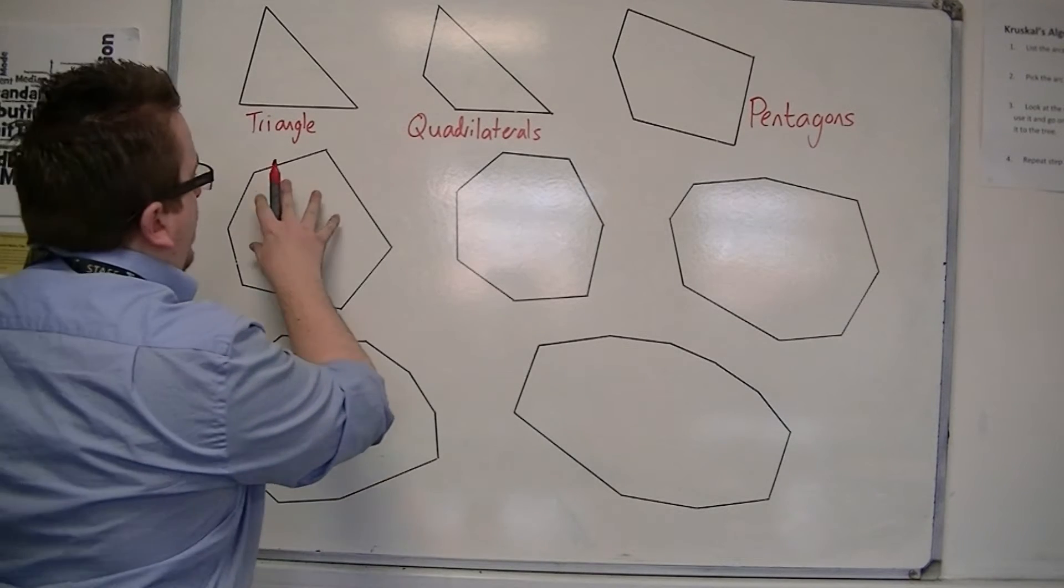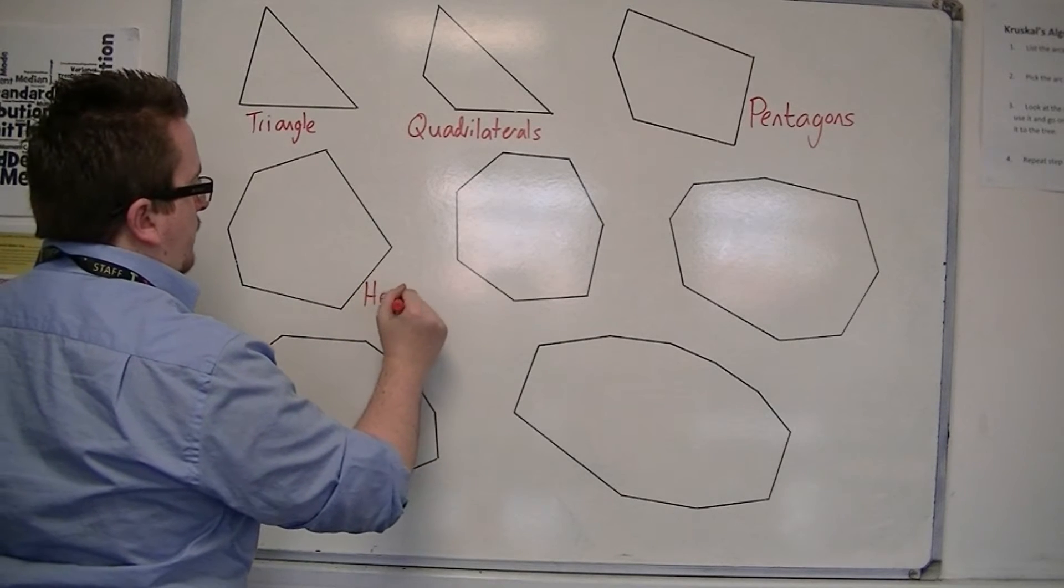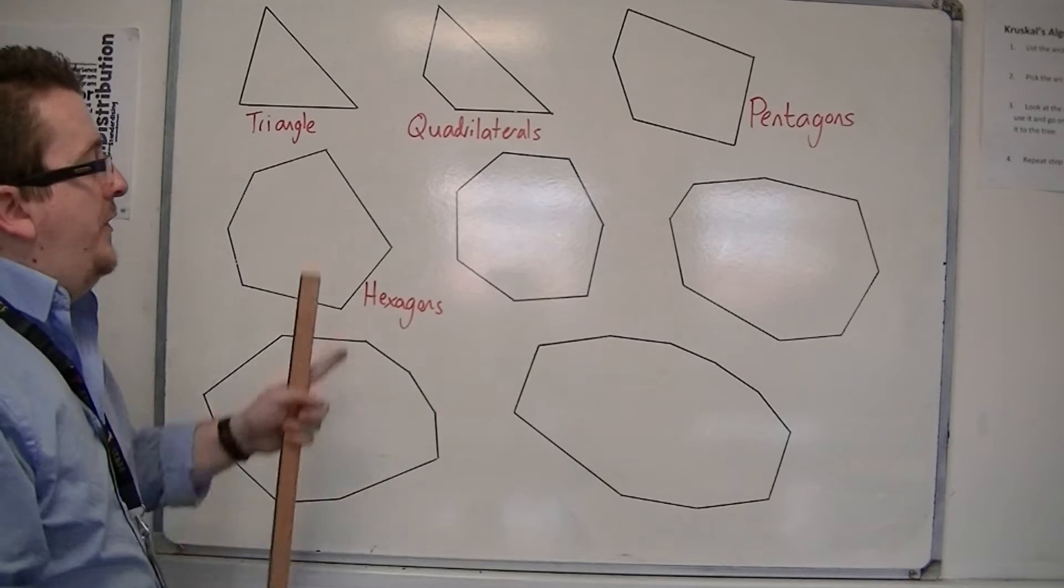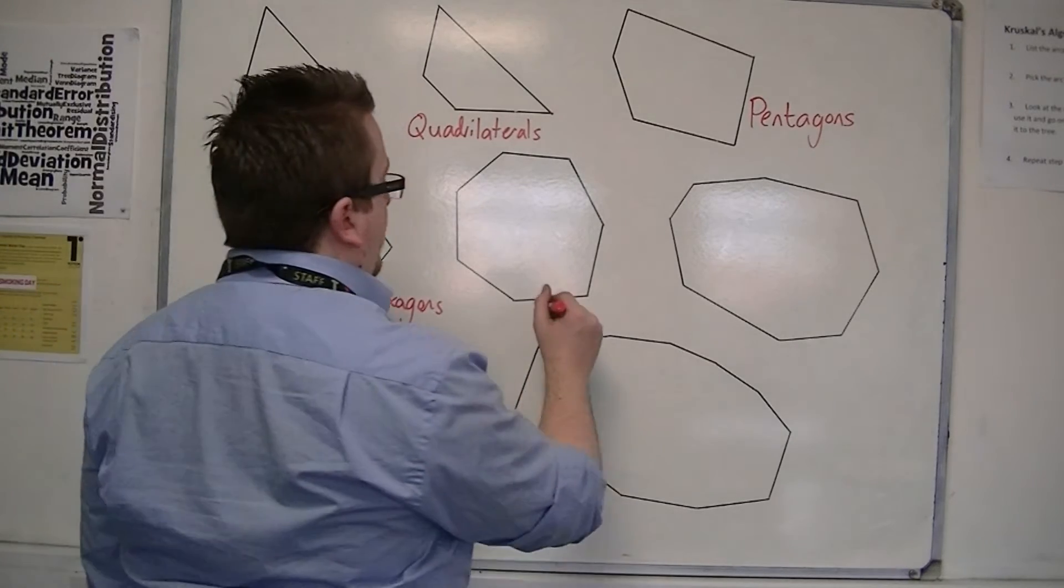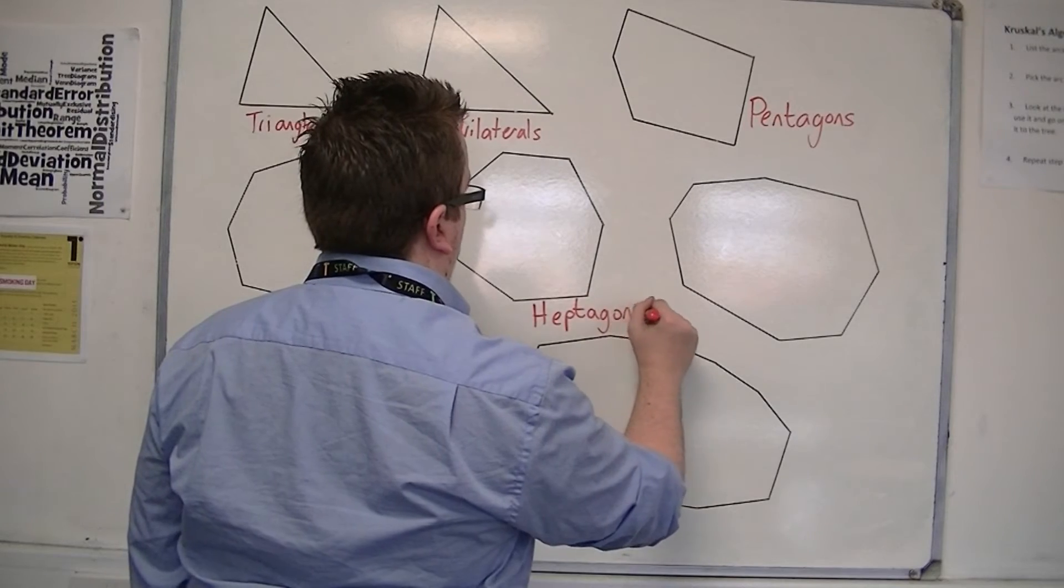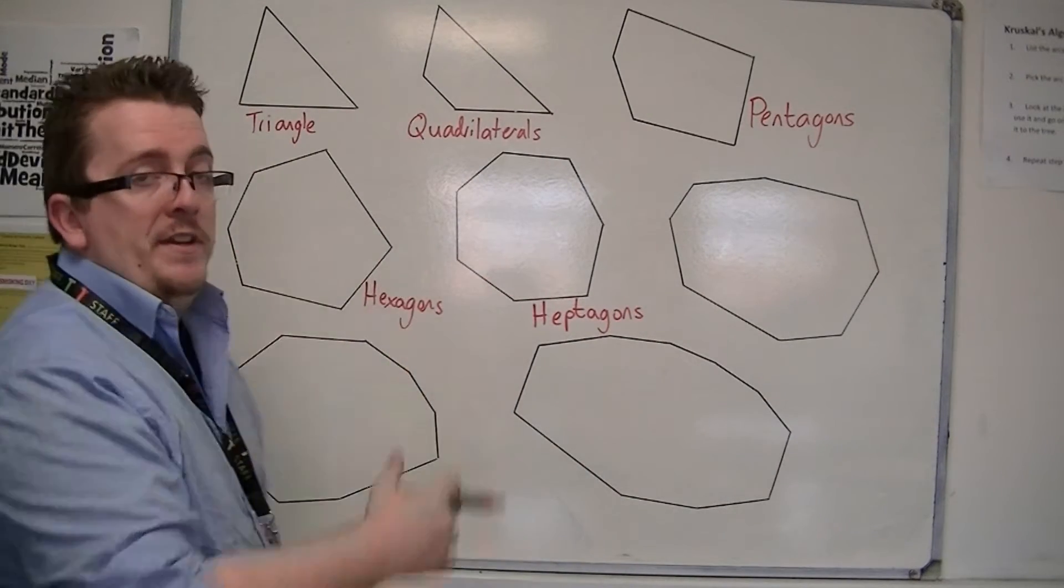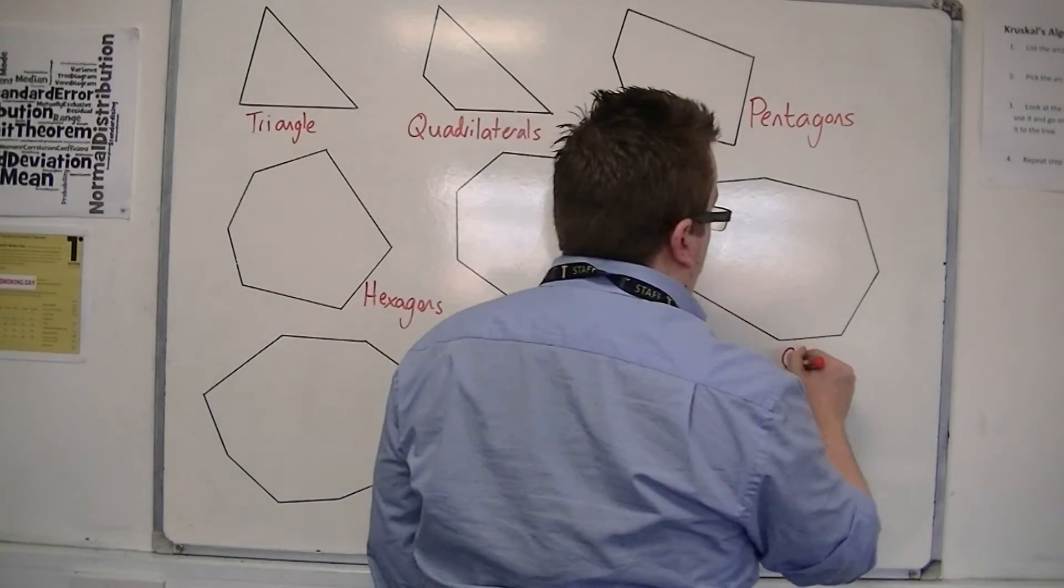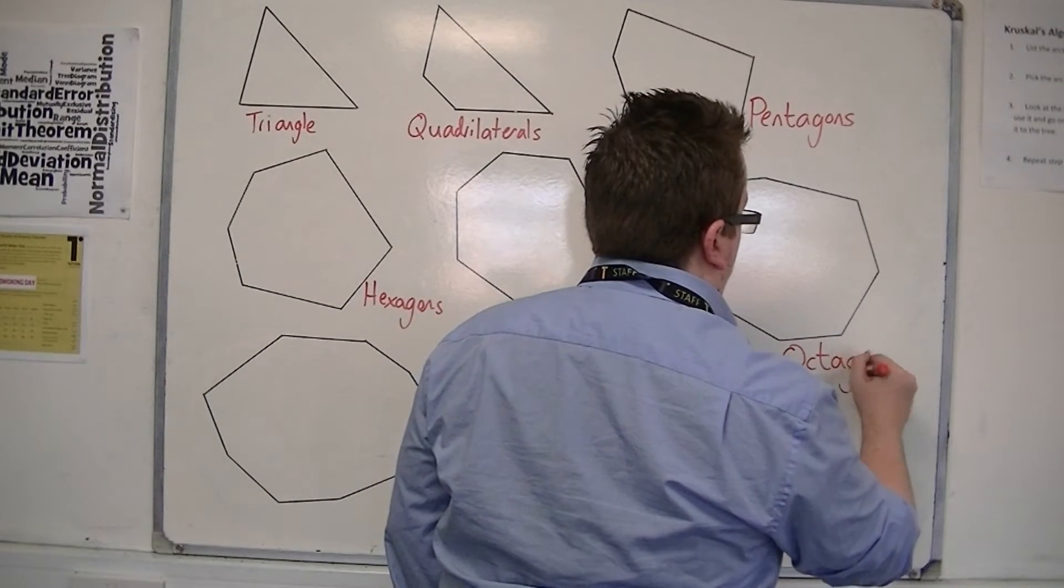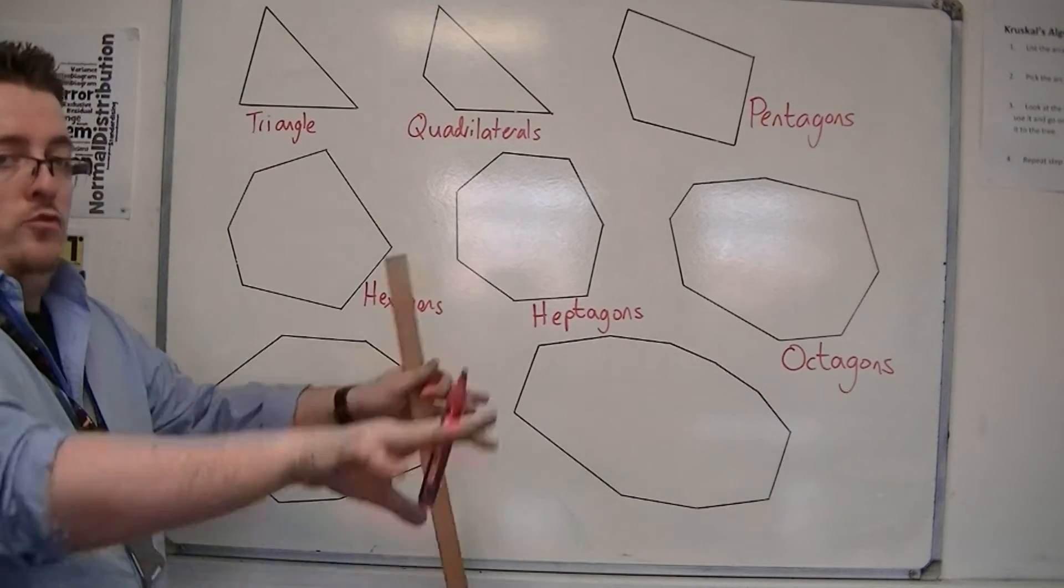Then we've got six-sided shapes, known as hexagons. And seven-sided shapes, known as heptagons. We've got eight-sided shapes, known as octagons. So octopus has eight legs, or eight tendrils.